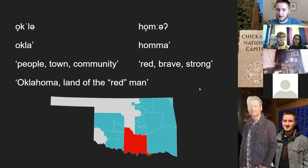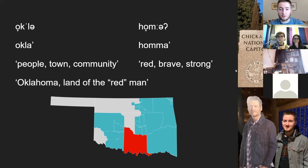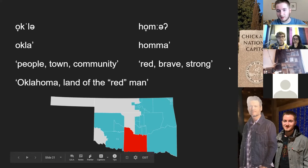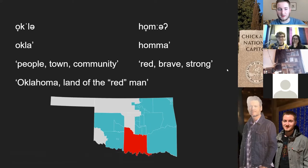In Oklahoma, the Chickasaw were able to establish a new nation called the Chickasaw Nation, which remained independent for some decades until the establishment of the state of Oklahoma. The Chickasaw National Capital, which I took a picture of a few days ago, was built in 1898 and was taken from the Chickasaw people less than 20 years later by the Oklahoma state government. This is located in Tishomingo, Oklahoma, which is also famous for being the hometown of Blake Shelton.